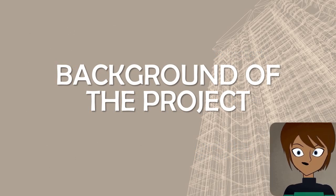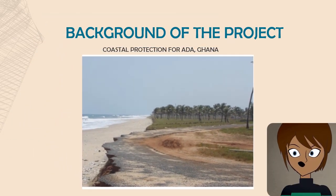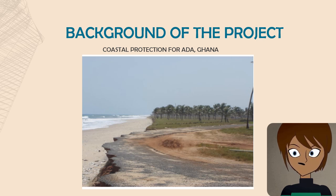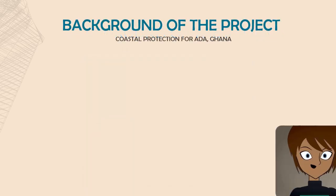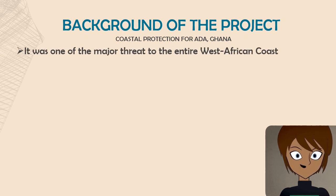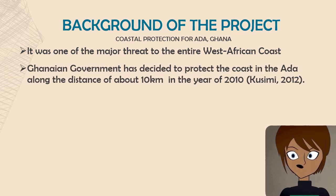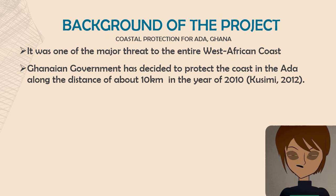For our case study, we are looking at the coastal protection project for Ada in Ghana. As you can see in the picture on the slide, it is an example of the problem of coastal line erosion. Coastal protection for Ada in Ghana was one of the major threats to the entire West African coast, and in 2010 the Ghanaian government decided to protect the coast along a distance of about 10 kilometers, according to Kusimi 2012.